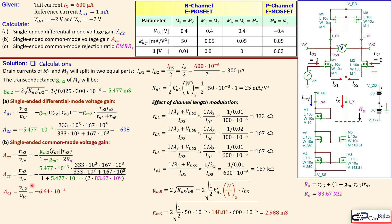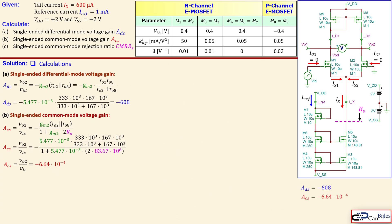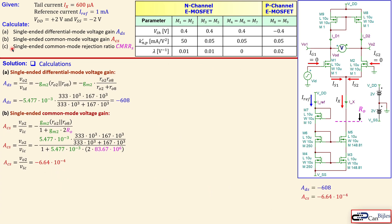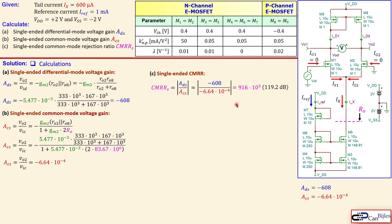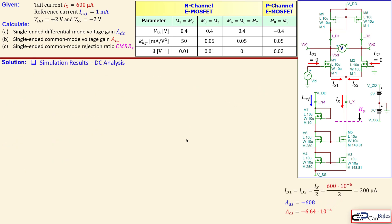Taking the ratio of the differential mode gain and common mode gain to find the single-ended common mode rejection ratio (CMRR): |Ads/Acs| gives approximately 916 × 10³, which is about 119.2 dB.